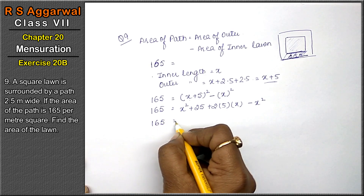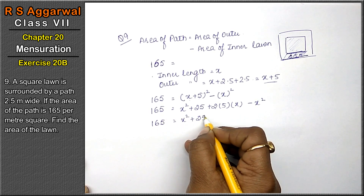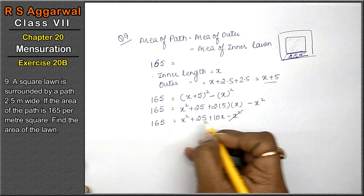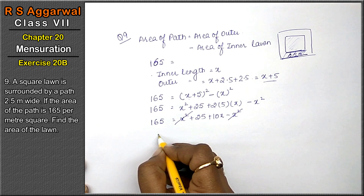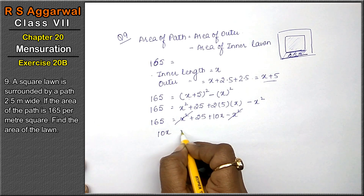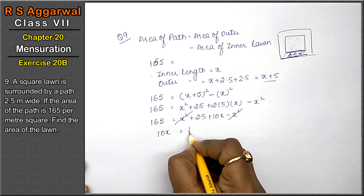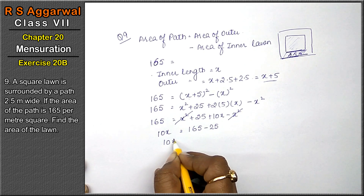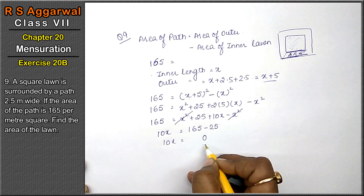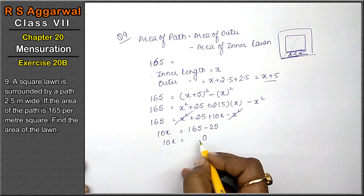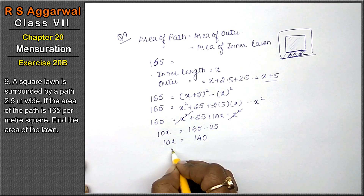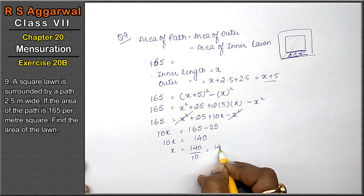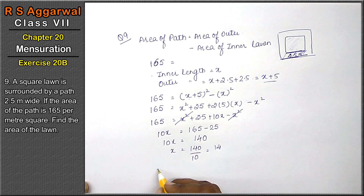165 equals x² + 25 + 10x minus x². The x² terms cancel, so we get 10x + 25 = 165, which gives 10x = 165 minus 25 = 140. Therefore x = 140 divided by 10, that is 14. So the inner side is 14 meters.